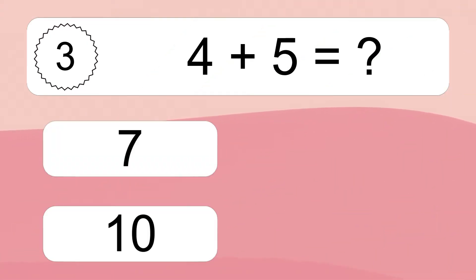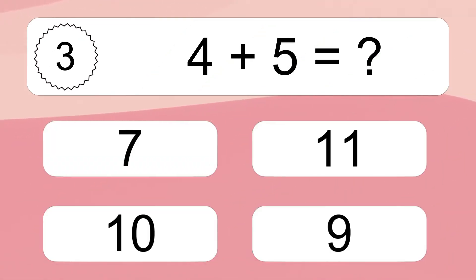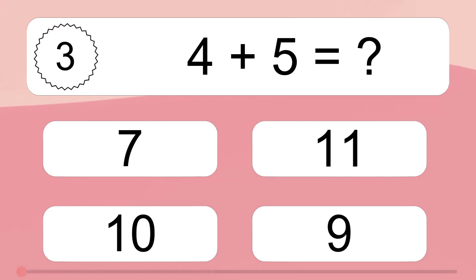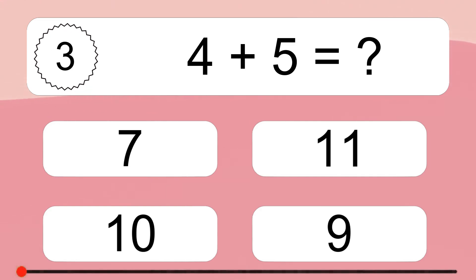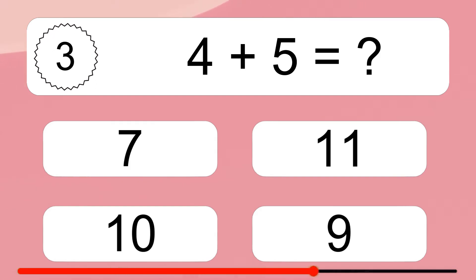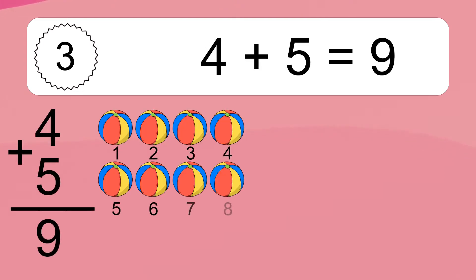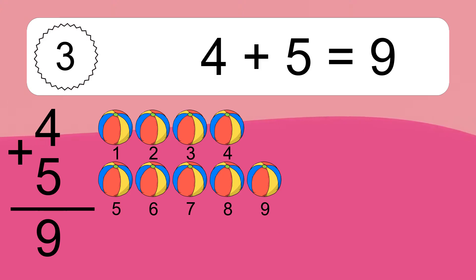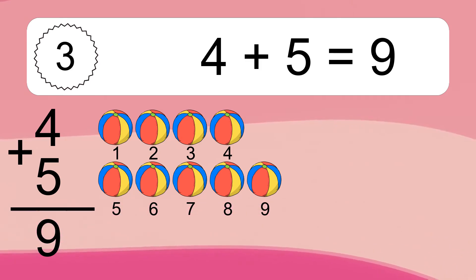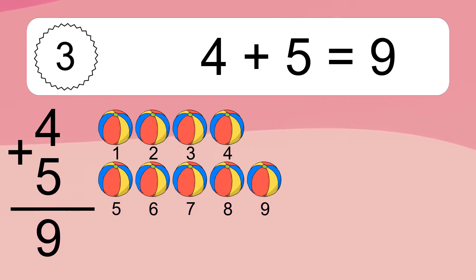4 plus 5 equals what? 4 plus 5 equals 9. Let's count it: 1, 2, 3, 4, 5, 6, 7, 8, 9.